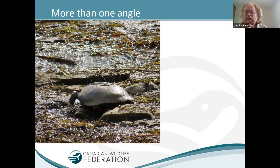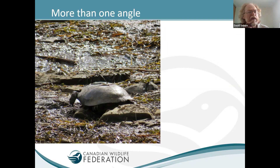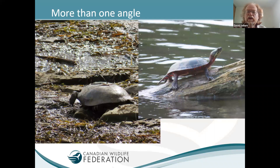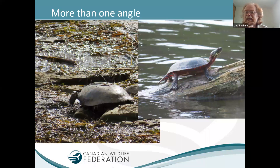Sometimes the turtle is facing away from us — we can see a limb and the back of the shell, but I wouldn't feel certain of the identification from that photograph alone. Taking a shot from more than one angle can really improve things. A shot from the side clearly showing the red along the side of the shell, the neck, and the head sticking out makes it very easy to identify as a painted turtle. When in doubt, try to get more than one angle to make it easier for someone else to identify that turtle.